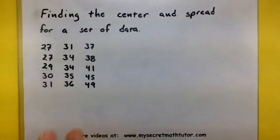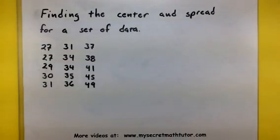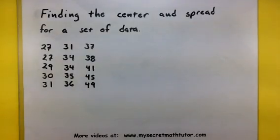So take a look at our data here, and first we are going to find the center. Basically, it's exactly what you think it should be. The center is basically the place in the data where approximately half the values are less than it and approximately half the values are greater than it.